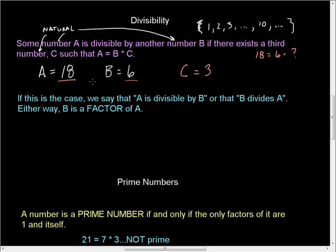By the way, B is a factor of A. All of these things are true. So, 18 is divisible by 6. Or, 6 divides 18. Or, simply, that 6 is a factor of 18. Any one of those three.